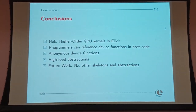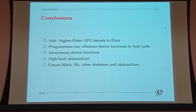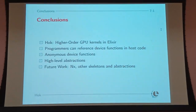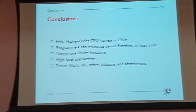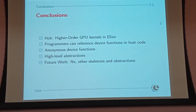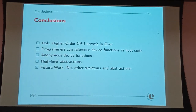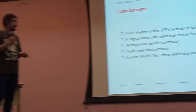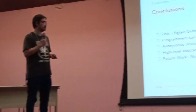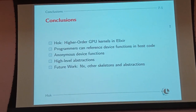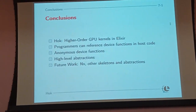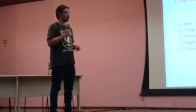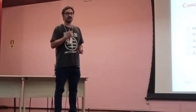In summary, HOC is an extension for GPU programming in Elixir. The main abstraction is higher-order kernels — kernels that take functions as arguments — allowing programmers to reference device functions in host code and pass them to kernels. We also support anonymous device functions and have shown that these enable high-level abstractions like algorithmic skeletons and array comprehensions. For future work, we want to provide compatibility with the NX library to support additional array types, and implement more skeletons and abstractions.